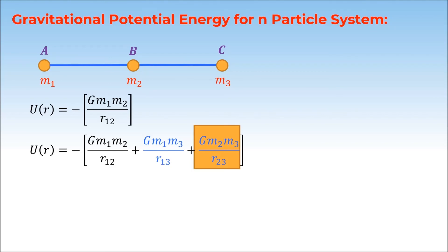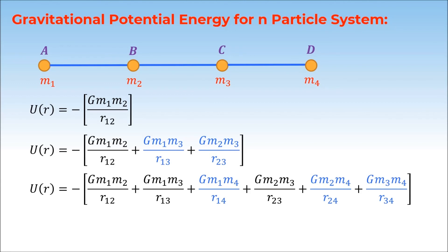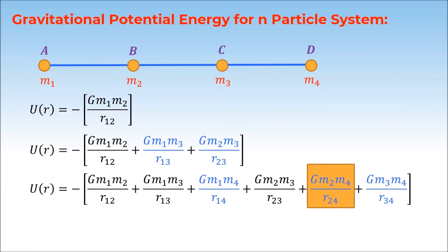If we introduce one more mass m4 into the system, the potential energy changes further. The potential energy for this four-particle system will be: U(r) = minus G m1 m2 over r12, plus G m1 m3 over r13, plus a new term G m1 m4 over r14, which is the potential energy due to interaction between mass m1 and m4, plus the gravitational potential energy due to interaction between mass m4 and m3. Basically, each pair of masses contributes a term to the total gravitational potential energy.